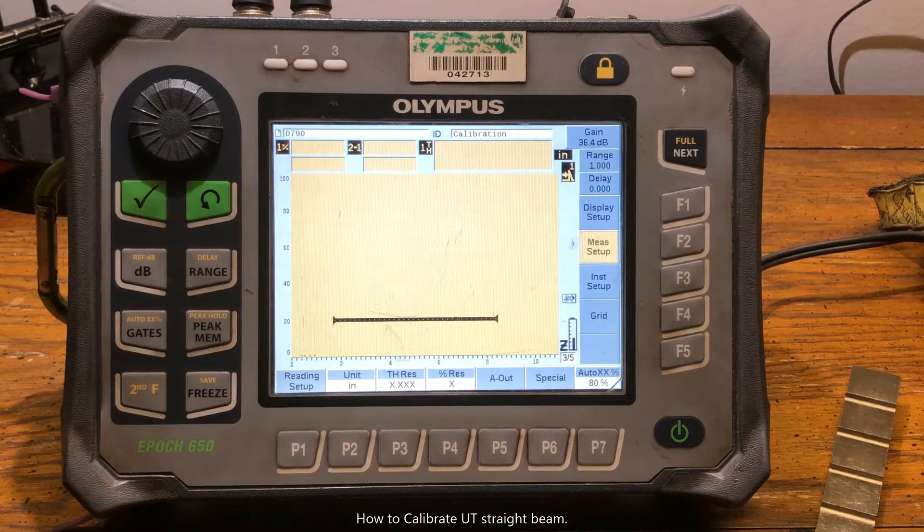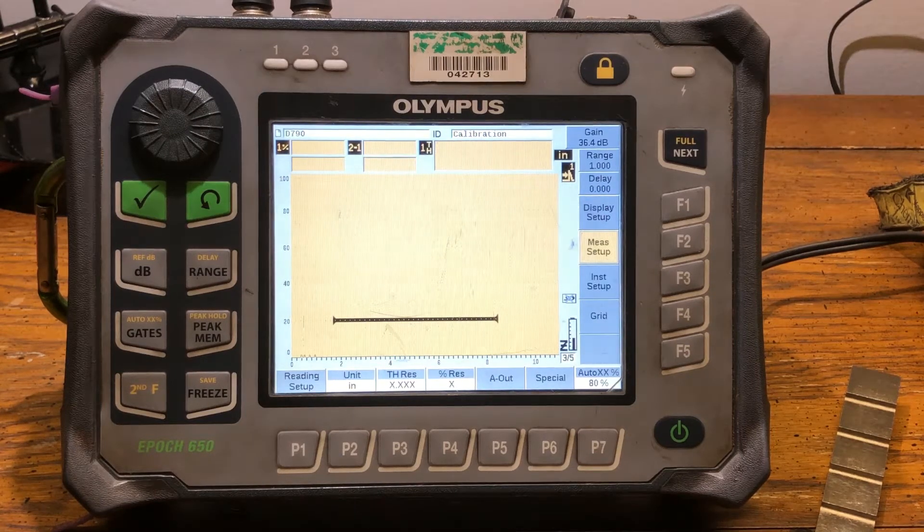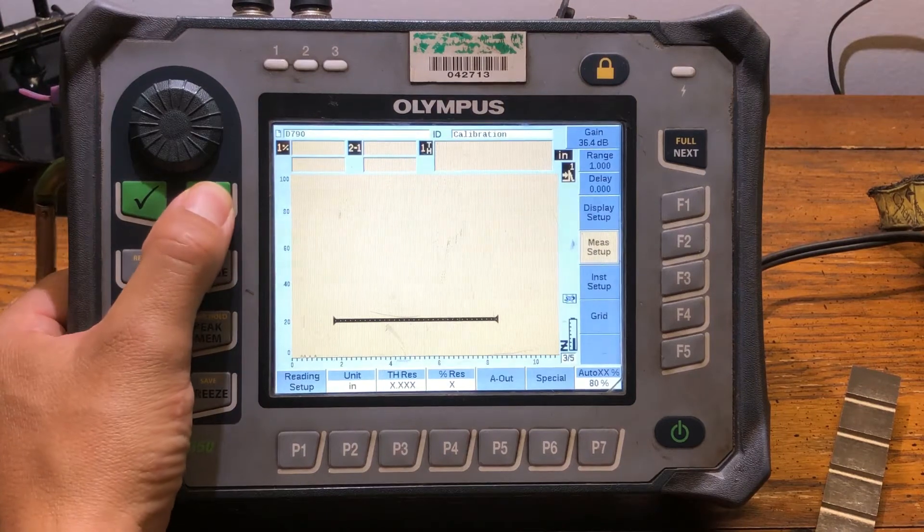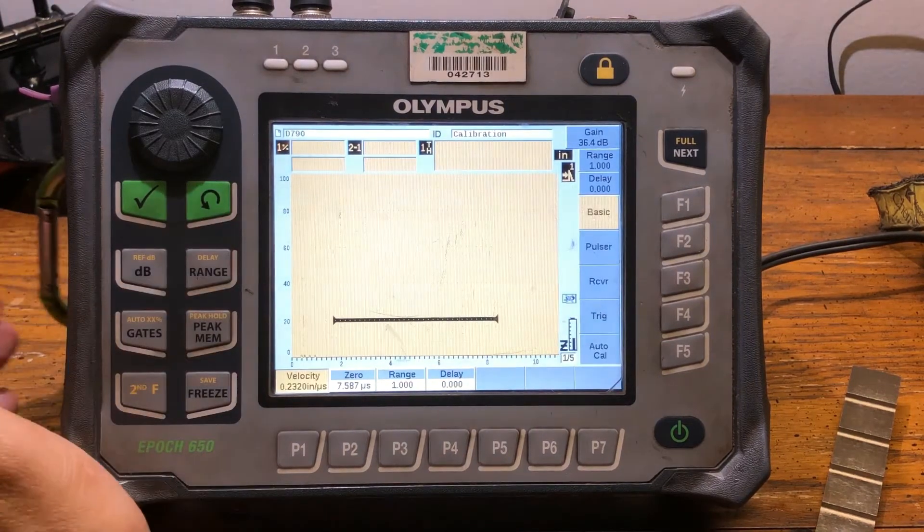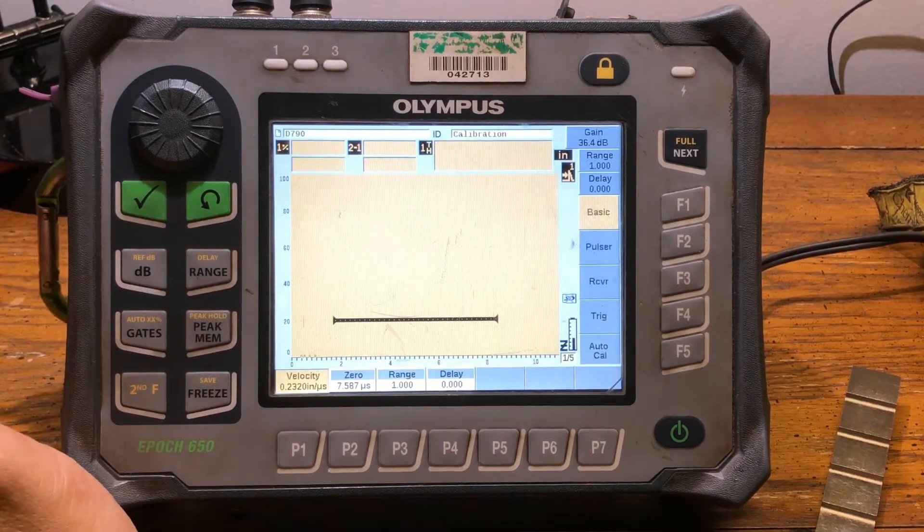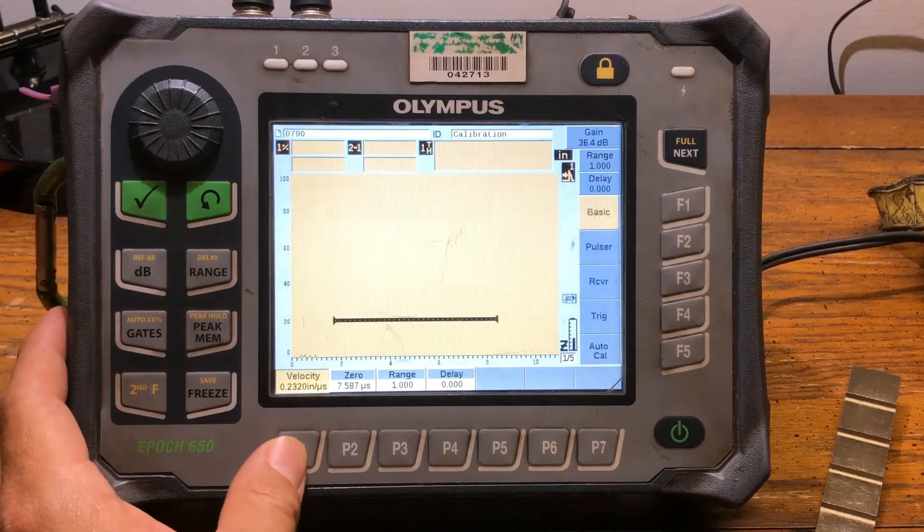We find ourselves in this display setting and what we're gonna do is hit this back button right here, and it takes us to this display setting. Since we're gonna be calibrating to carbon steel, our velocity should be at 0.2320.